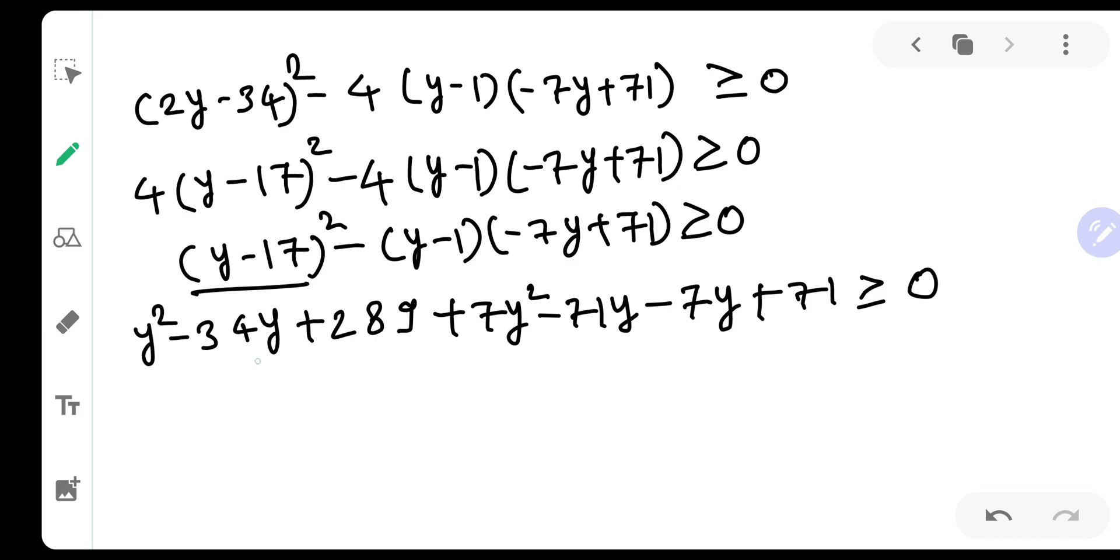So y square plus 7y square as you can observe is nothing but 8y square. Then 71 and 7 will be 78. 78 and 34 will be 112. Then 289 plus 71, so 290 plus 73 is 360. Greater than or equal to 0.